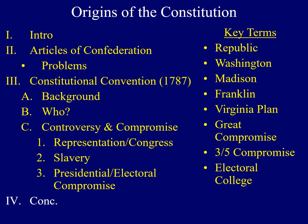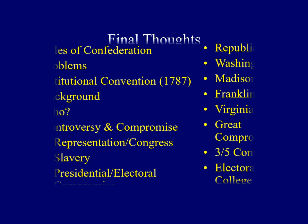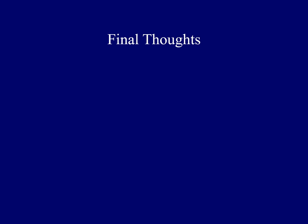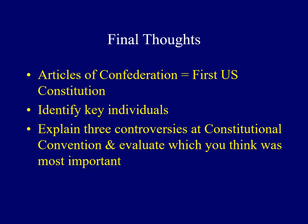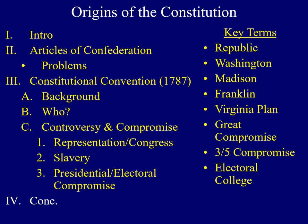Hopefully that explanation wasn't too confusing. To sum up the key ideas from this lecture: the Articles of Confederation was the name of the first Constitution of the United States; you should be able to identify key individuals who shaped events at the Constitutional Convention; and finally, you should be able to explain three controversies from the Convention and evaluate which you think was most important. That ends the first lecture for our class. I hope you learned something new — we'll see you online. Have a great day, everybody.